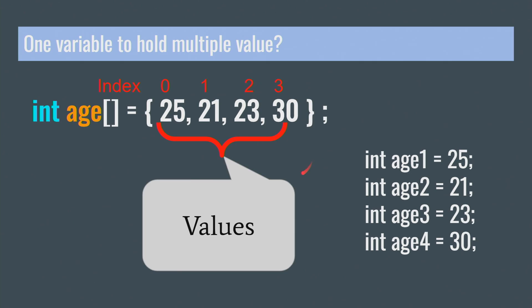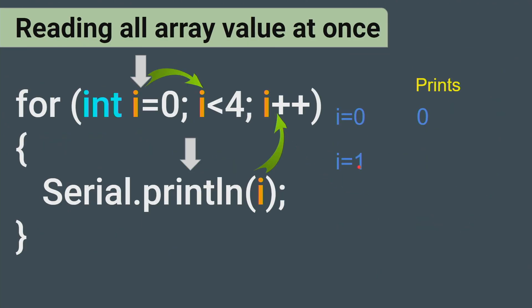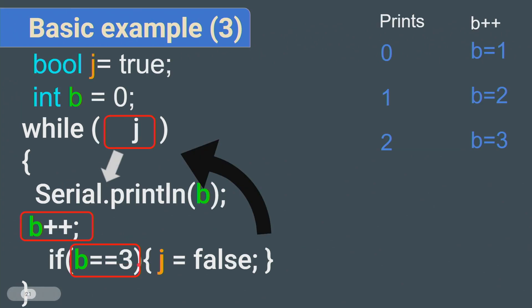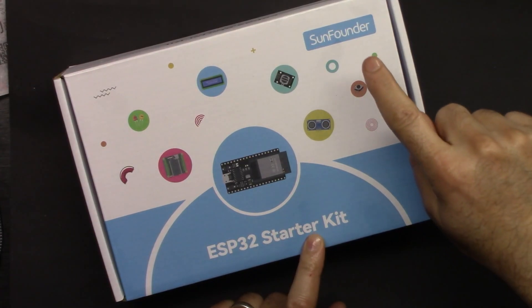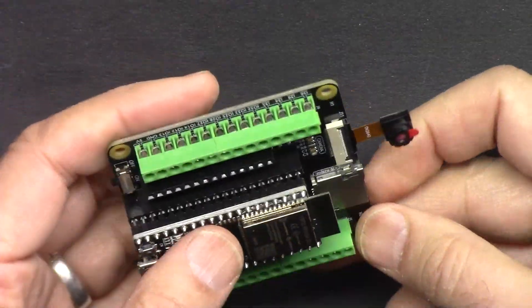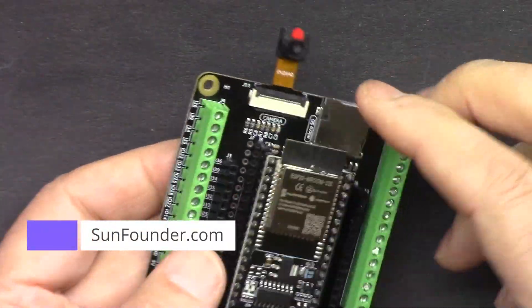Hi, welcome to a video tutorial from Robojax. In this video we are going to learn about arrays, for loops, while loops, and do-while loops. This is the ESP32 starter kit from SunFounder — the best ESP32 learning kit from SunFounder.